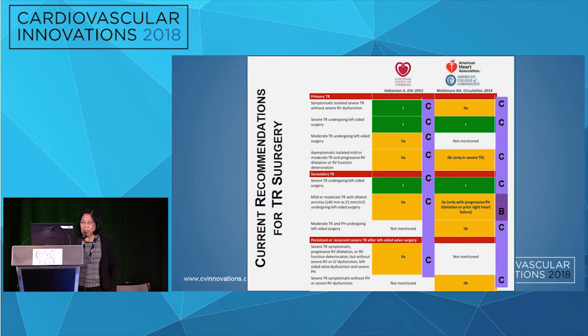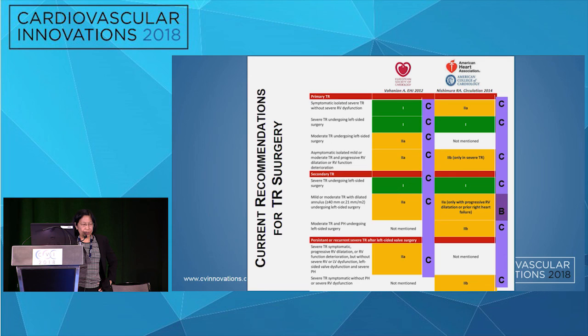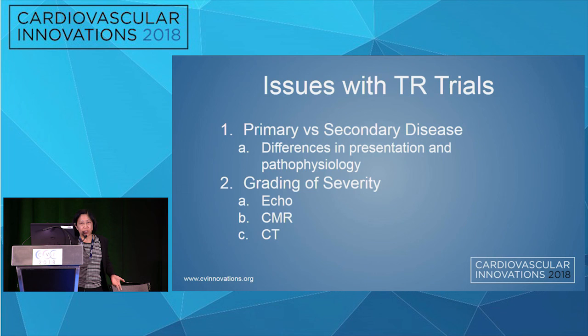This is a really understudied valve. The one indication involving tricuspid annular dilatation without severe regurgitation uses an annular size from a four-chamber view of greater than 40 millimeters or 21 millimeters per meter squared indexed to body size. Joao already showed beautifully why this is, frankly, a nonsensical measure — because it entirely depends on the angle at which you obtain that four-chamber view. These guidelines really need a lot of work, and we're designing trials now in the absence of solid understanding.